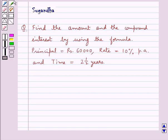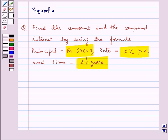Hello and welcome to the session. In this session we discuss the following question: find the amount and the compound interest by using the formula. We are given principal equal to Rs 60,000, rate equal to 10% per annum, and time equal to 2.5 years.